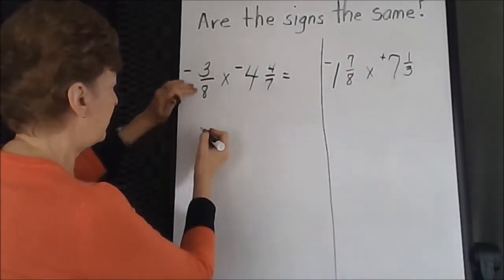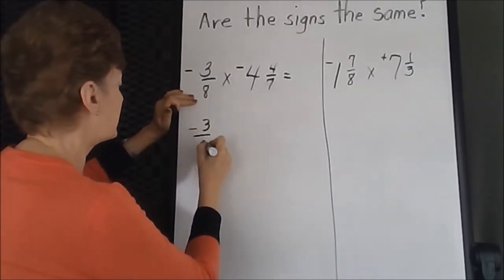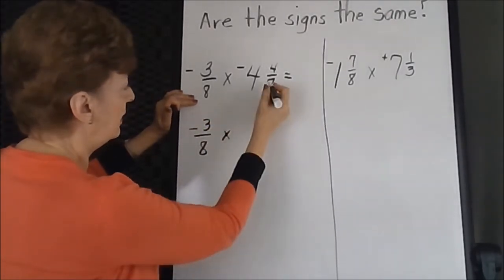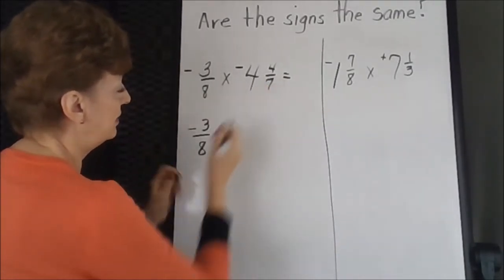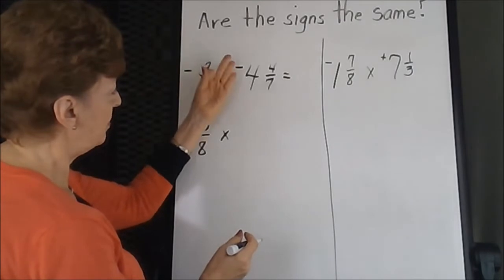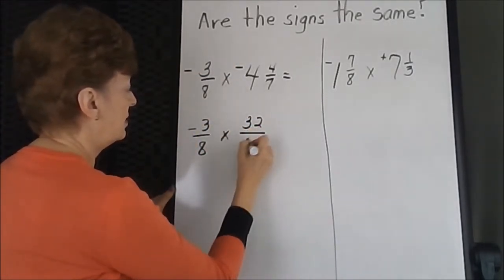Next, the first fraction is already in a common fraction, so I'm going to just copy it. Change my mixed number. 7 times 4 is 28, 29, 30, 31, 32. I have 32 sevenths.